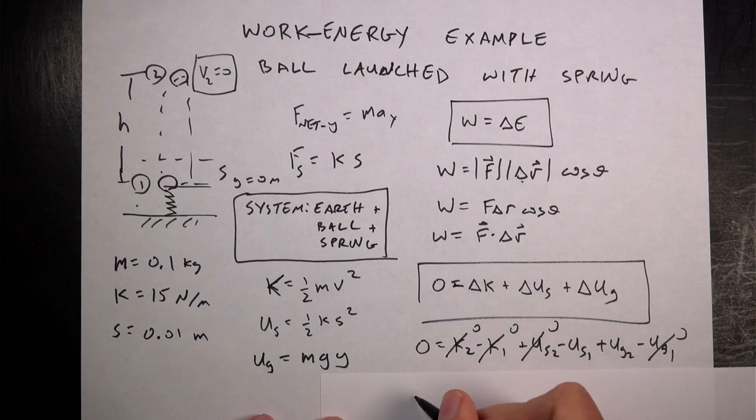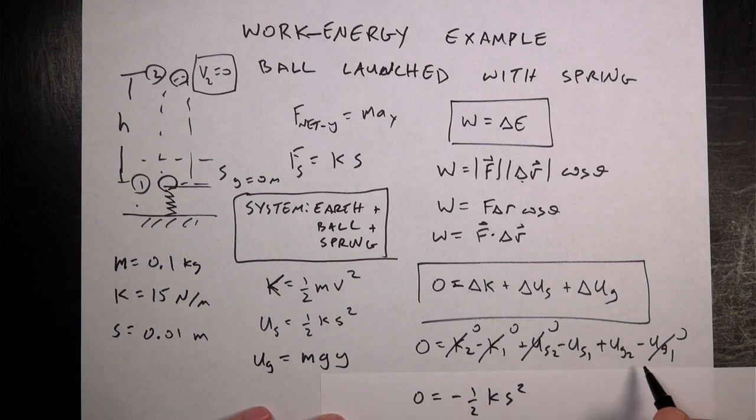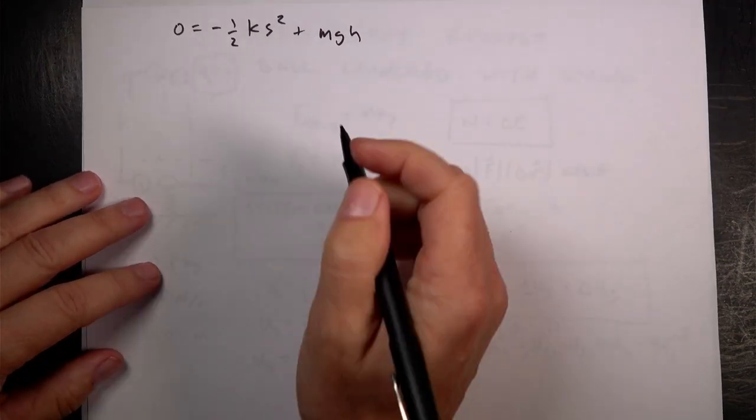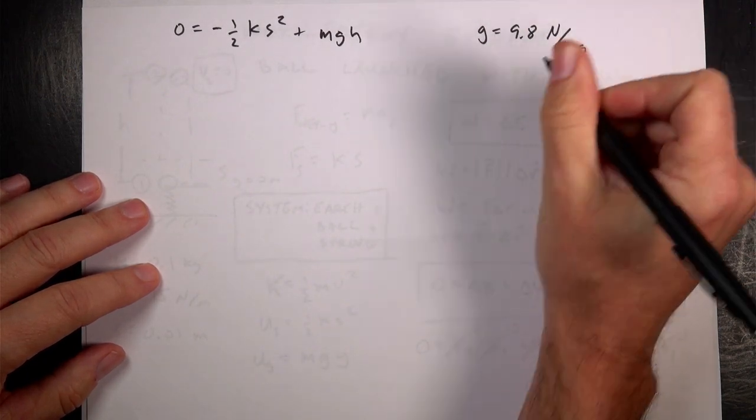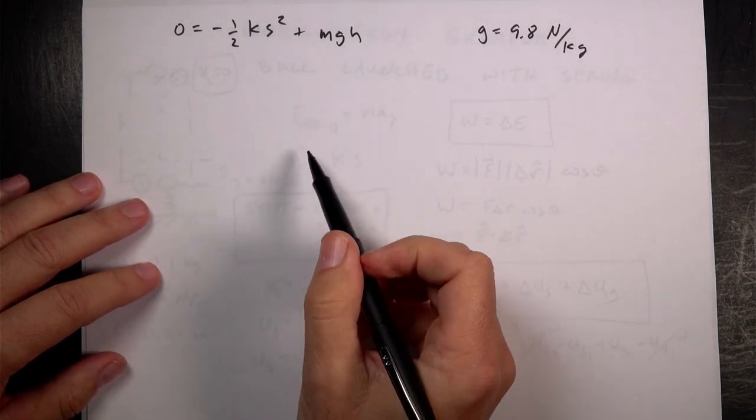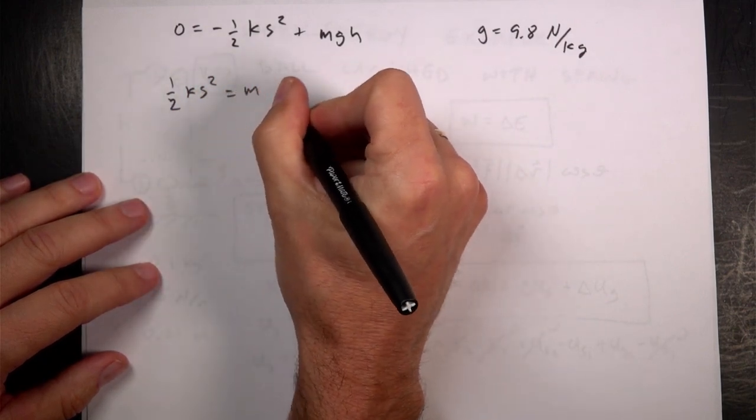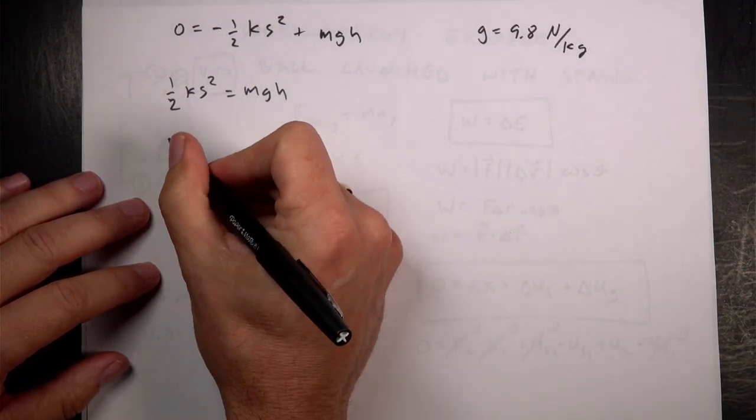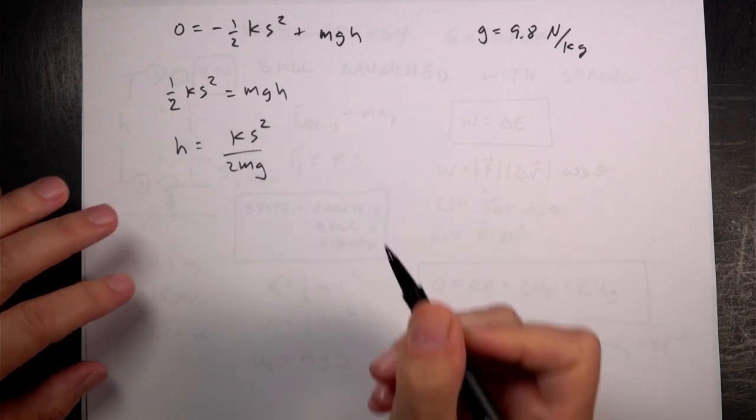I have a pretty easy equation right now. So let's write this out. So I have zero equals negative Us1, which is one-half ks squared, right, it's compressed amount s. And then plus mgh. So h is how high it is. g, of course, is the gravitational field, 9.8 newtons per kilogram. Now I just want to solve for h. Well, let's add this to both sides. I get one-half ks squared equals mgh. Now I want to solve for h. I'm going to divide both sides by mg. And I'm going to swap it around. h is going to be ks squared over 2mg. That's how high it's going to go.